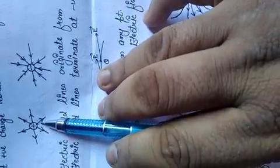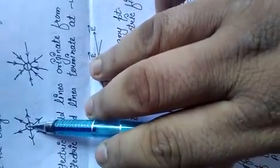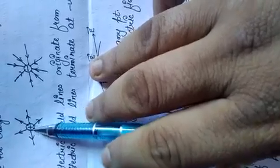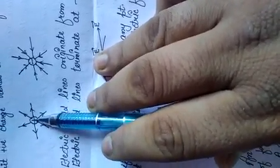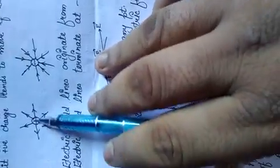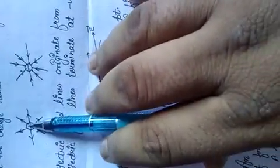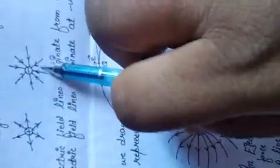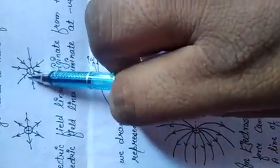If you have a single positive charge, then the electric field lines originate from the positive charge. This is the electric field line.